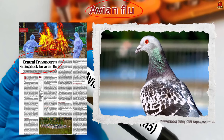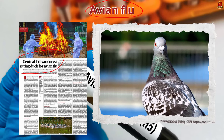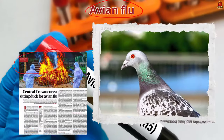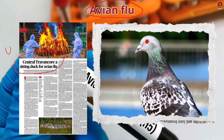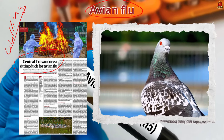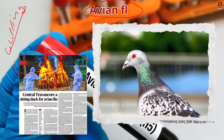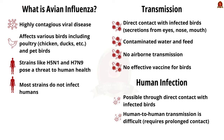Rapid response teams have culled nearly 1,71,000 birds to contain the spread. Measures are being taken to prevent human infections, but the outbreak has already caused substantial losses for local farmers. We will now discuss avian flu from a preliminary examination perspective.